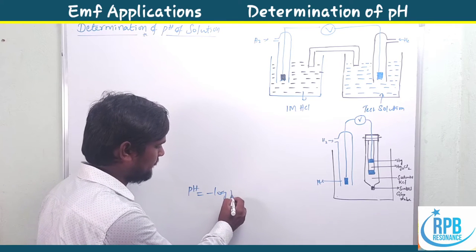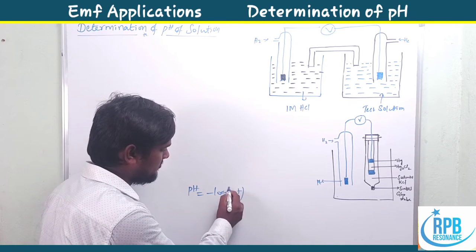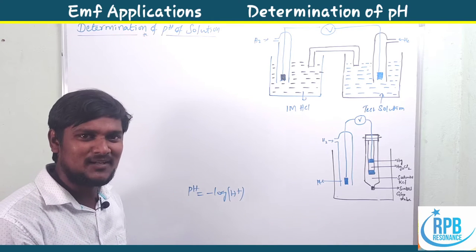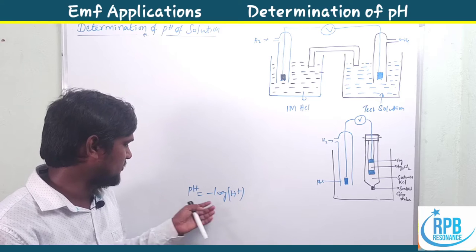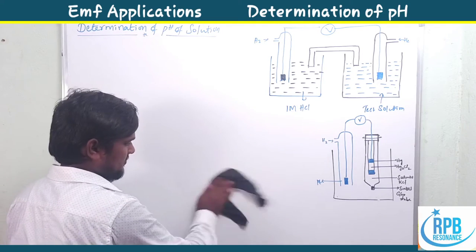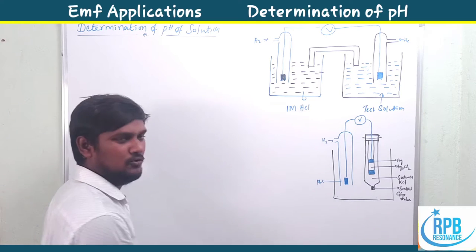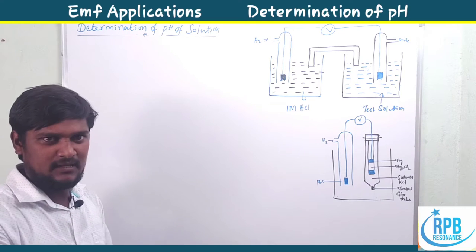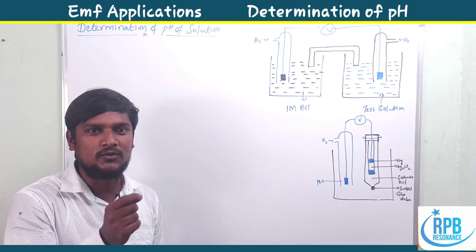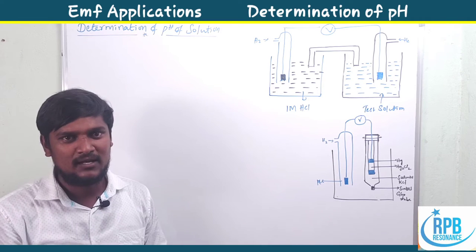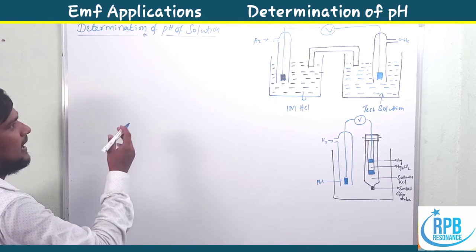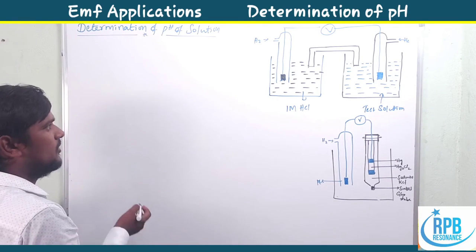We know that pH is equal to the negative logarithm of H+ concentration. So the EMF mainly depends upon the concentration of H+ ions. With the help of H+ ion concentration we can easily find the pH value. The unknown solution pH value is determined using one half-cell and another half-cell with the help of known standard electrodes.